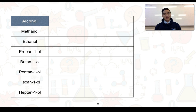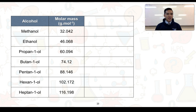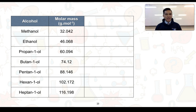We can see this idea of 'like dissolves like' when comparing a range of alcohols. We have a list of alcohols here increasing in size, going from methanol down to heptan-1-ol, and all of these are primary alcohols with the OH group on the first carbon. Comparing their molar mass, we can see that it does increase — methanol at 32.042, going down to heptan-1-ol at 116.198.